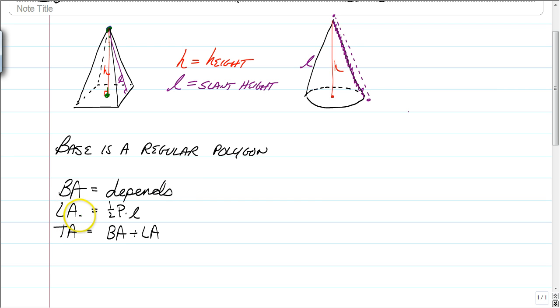For a lateral area, it's going to be one half of the perimeter times the slant height. And the reason why, if you look at one of the faces of a pyramid, if you just look at it in two dimensions, it's a triangle. And to find the area of the triangle, we're going to do the base times the height, but our formula is one half the base times the height. That's just a straight up formula for area of a triangle.